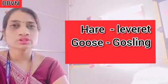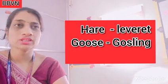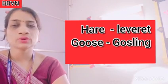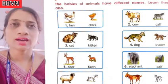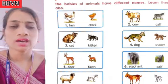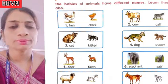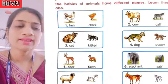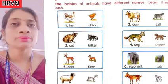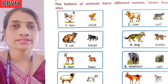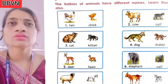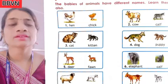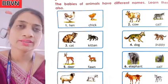Now let's repeat together. Hen → chick. Cow → calf. Cat → kitten. Dog → puppy. Deer → fawn. Elephant → calf. Sheep → lamb — the baby of sheep is known as lamb. Goat → kid. Horse → foal. Lion → cub. Hare → leveret. Goose → gosling.